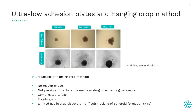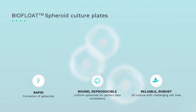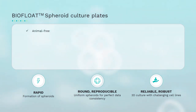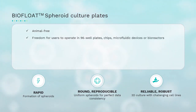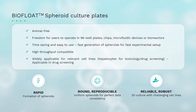BioFloat plates facilitate the rapid formation of uniformly shaped spheroids with consistent structure and functionality. The main advantages of our biologically inert, cell- and protein-repellent surface technology are: the plates are animal-free; they offer flexibility for use in 96-well and 384-well formats, as well as the BioFloat Flex solution for biochips and microfluidic devices; they are time-saving and easy to use for fast experimental setup; they are high-throughput compatible; and they meet three core requirements — rapid spheroid formation, round and reproducible spheroids for perfect data consistency, and reliable, robust performance.